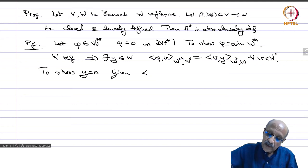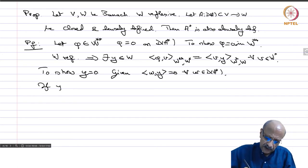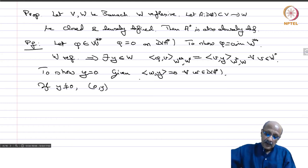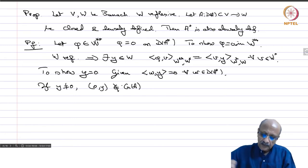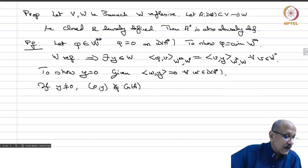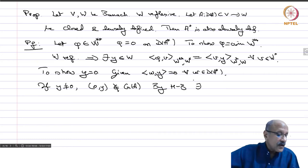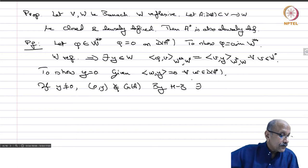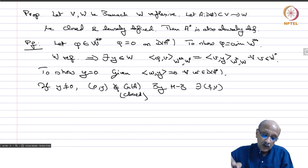We are given that w(Y) equals 0 for all w in domain of A star. If Y is not 0, then (0, Y) does not belong to the graph of A, since 0 is in domain of A and A(0) = 0, not Y. So (0, Y) does not belong to graph(A). Since graph(A) is closed (A is a closed operator), by Hahn-Banach there exists (F, V) in V star cross W star which does not vanish on (0, Y).